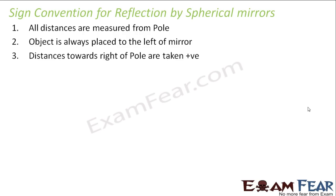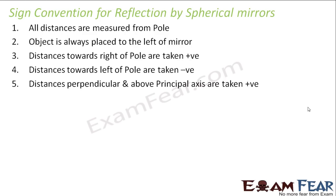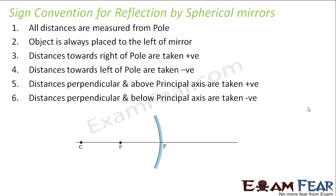Distances towards the right of the pole are taken as positive. As mentioned, the pole is like your origin, so anything on the right hand side of the origin is positive and anything towards the left hand side is negative. Distances perpendicular and above the principal axis are taken as positive — that means whenever an image is formed erect, it is above the principal axis, so it is taken as positive.